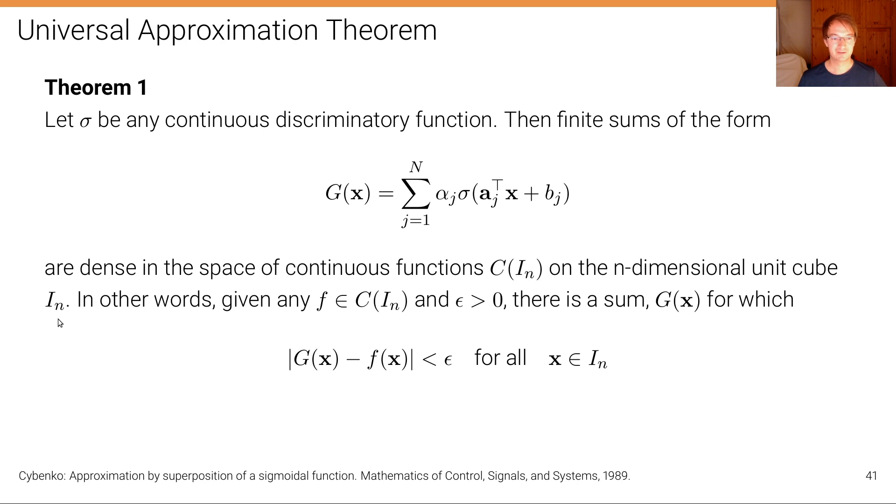In other words, given any function f out of this space of continuous functions on the unit cube and epsilon bigger than zero, there is a sum G(x) for which the following holds: the distance between G(x) and f(x) is smaller than epsilon for all x in the unit cube.